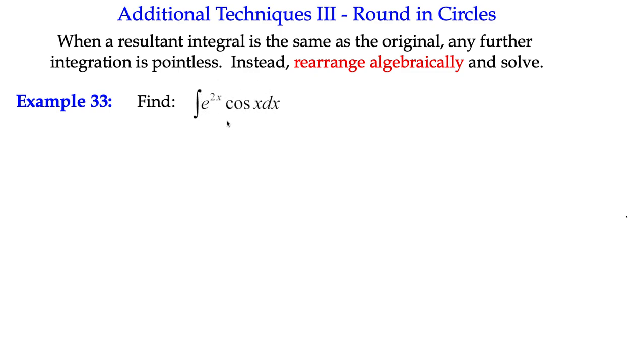The point is, if you know your integration by parts already, we're looking to try and select u as a term that's going to disappear, like a polynomial. Neither of these are going to disappear when we either differentiate or integrate, they're just going to cycle round.